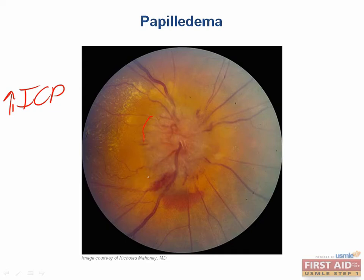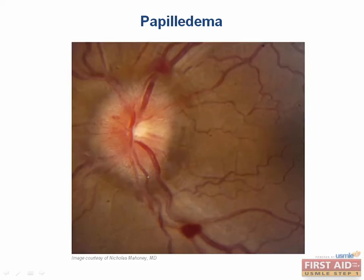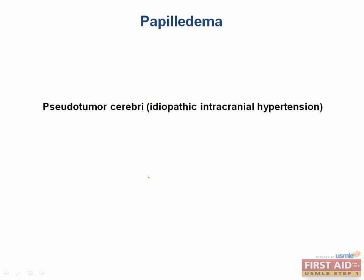It is important to remember that papilledema is a sign that there is increased pressure in the brain, but it doesn't tell you anything about the diagnosis. For instance, a 26-year-old obese woman comes to you with headaches, nausea, vomiting, and visual changes. Her MRI has no abnormalities. The answer is pseudotumor cerebri, also known as idiopathic intracranial hypertension. This is usually seen in young obese women and is increased intracranial pressure resulting from an unknown cause. There would need to be an absence of some other cause after clinical tests to arrive at this diagnosis.